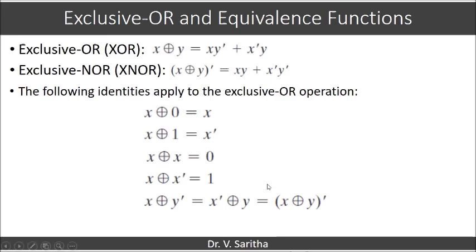Exclusive OR is represented as x XOR y. In terms of AND, OR, and NOT gates, it is x'y + xy'. Exclusive NOR is represented as (x XOR y)' for two variables, and in terms of AND, OR, and NOT gates, it is xy + x'y'.